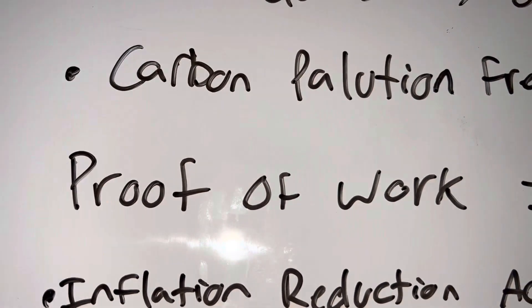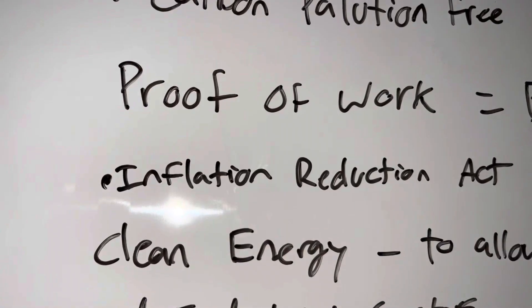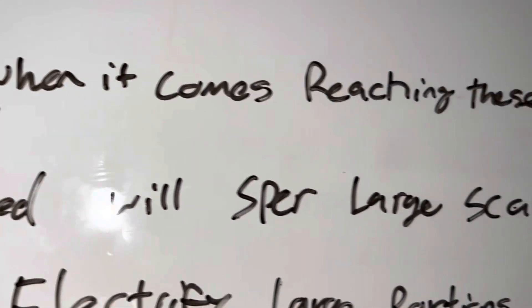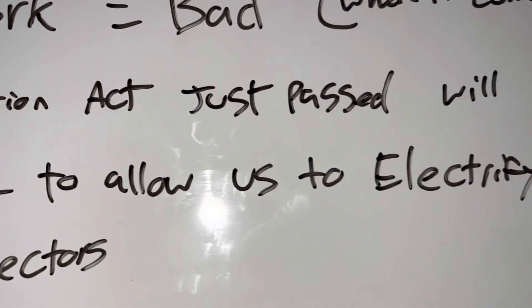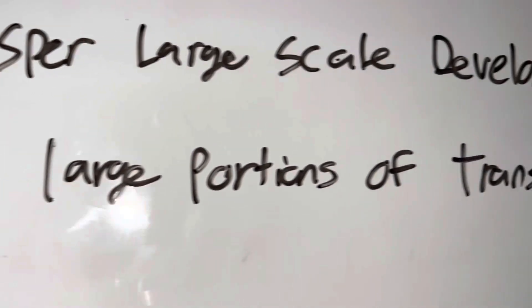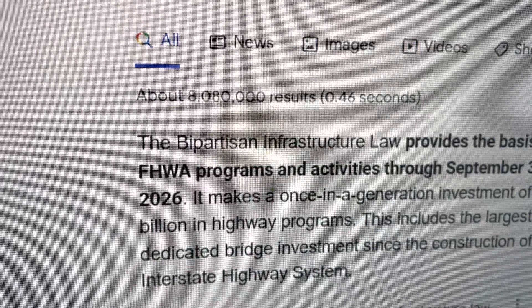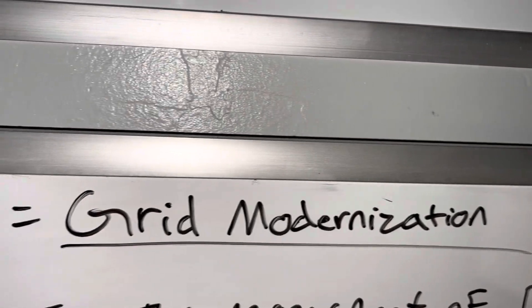Proof of work, which is how Bitcoin is mined, is bad when it comes to reaching those goals. Under the Biden administration, the Inflation Reduction Act just passed — it will spur large-scale development of clean energy to allow the US to electrify large portions of transit, buildings, and industrial sectors. If we pair that with the Bipartisan Infrastructure Law, it enables investment in grid modernization plus expansion. And what does Energy Web Token specialize in? Grid modernization.